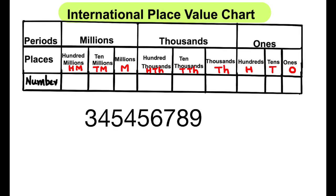Let us learn to read and write large numbers using the international place value chart. Consider the number 345,456,789. Let us place the digits of this number in the place value chart. 9 is the last digit of this number.